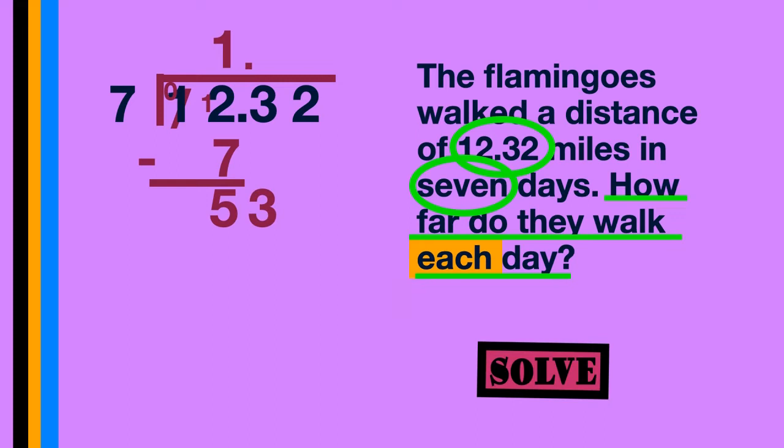Bring down our 3, and we now have the number 53. 7 into 53 goes 7 times. 7 times 7 is 49. Now it's time for us to subtract. But to subtract, we have to rename. Because we cannot take 9 from 3. So we rename the 5 to a 4, and the 3 now becomes 13. Now it's okay for us to subtract. 9 from 13 leaves 4, and 4 from 4 leaves 0. We bring down our 2, and our number is now 42.